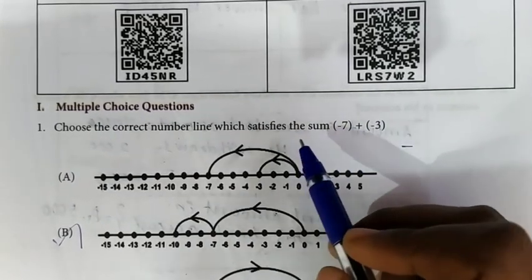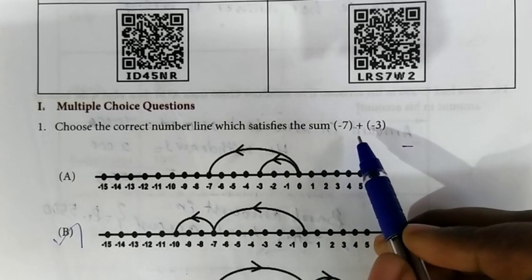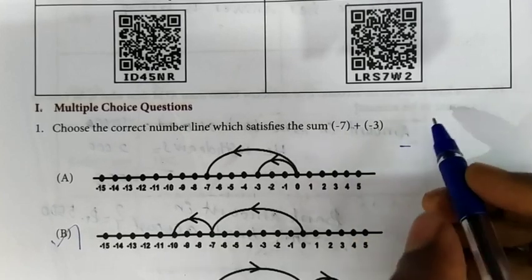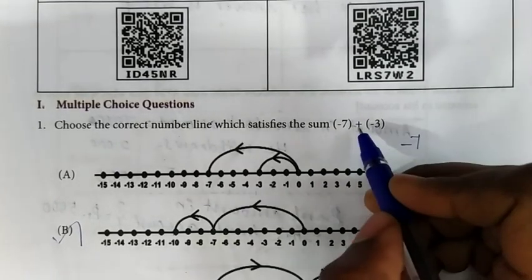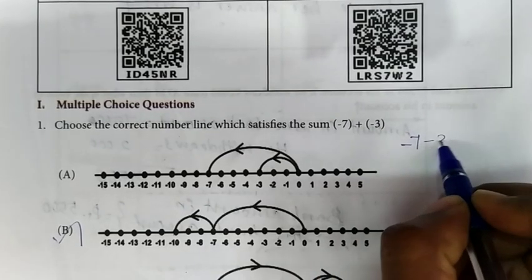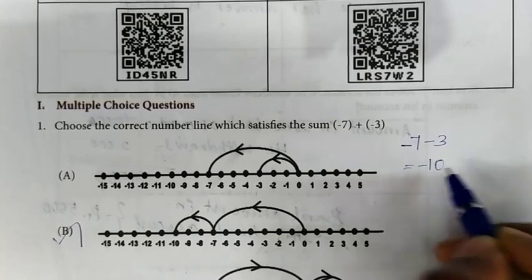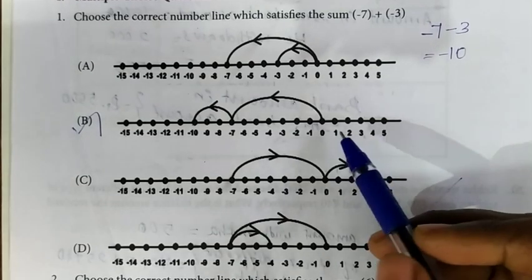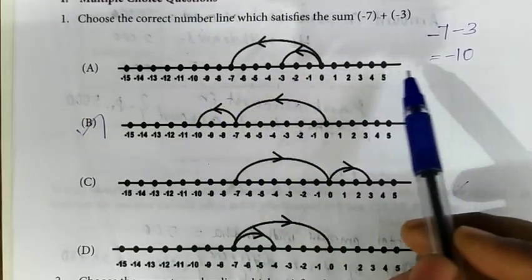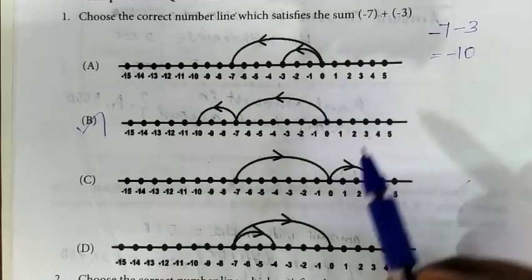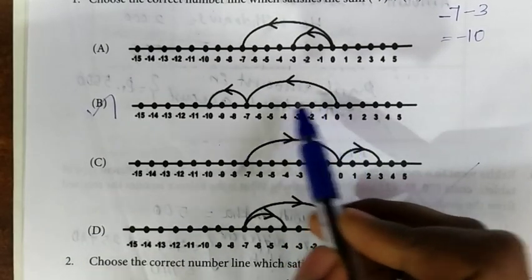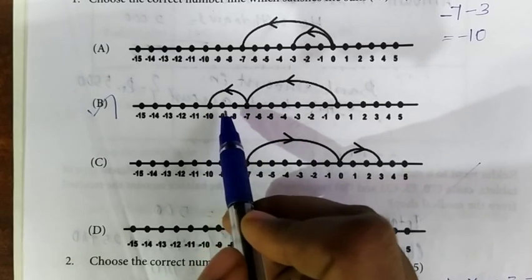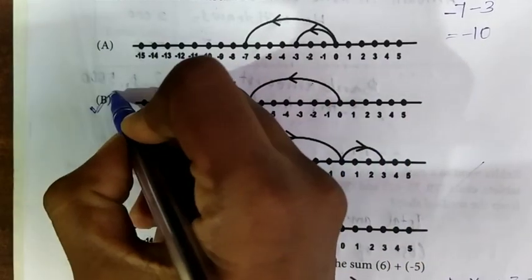Multiple choice question. First one: choose the correct number line which satisfies the sum of minus 7 plus minus 3. While adding, plus into minus gives minus, so minus 7 plus minus 3 equals minus 10. Check which number line gives the value of minus 10. Option A does not give minus 10. Option B shows 0 to minus 7, then minus 7 to minus 3, giving minus 10. So option B is the correct answer.